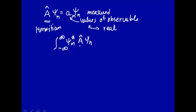This will give you some sort of... this is the expectation value, the expectation value of the observable in state n.